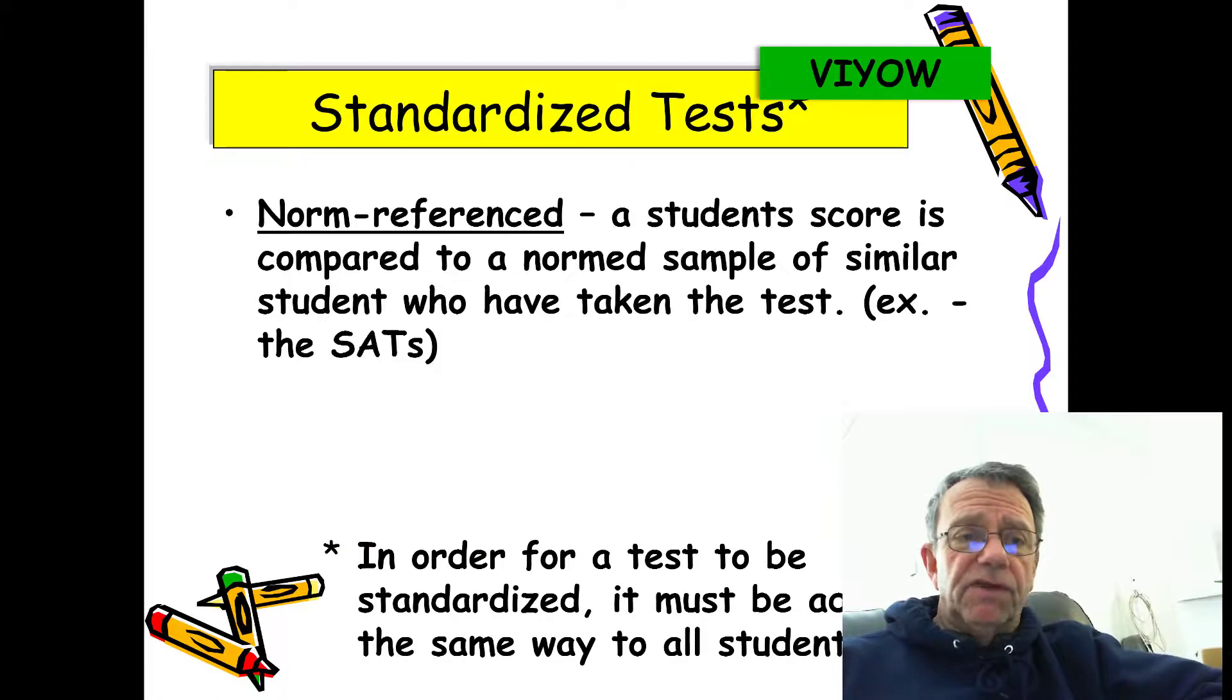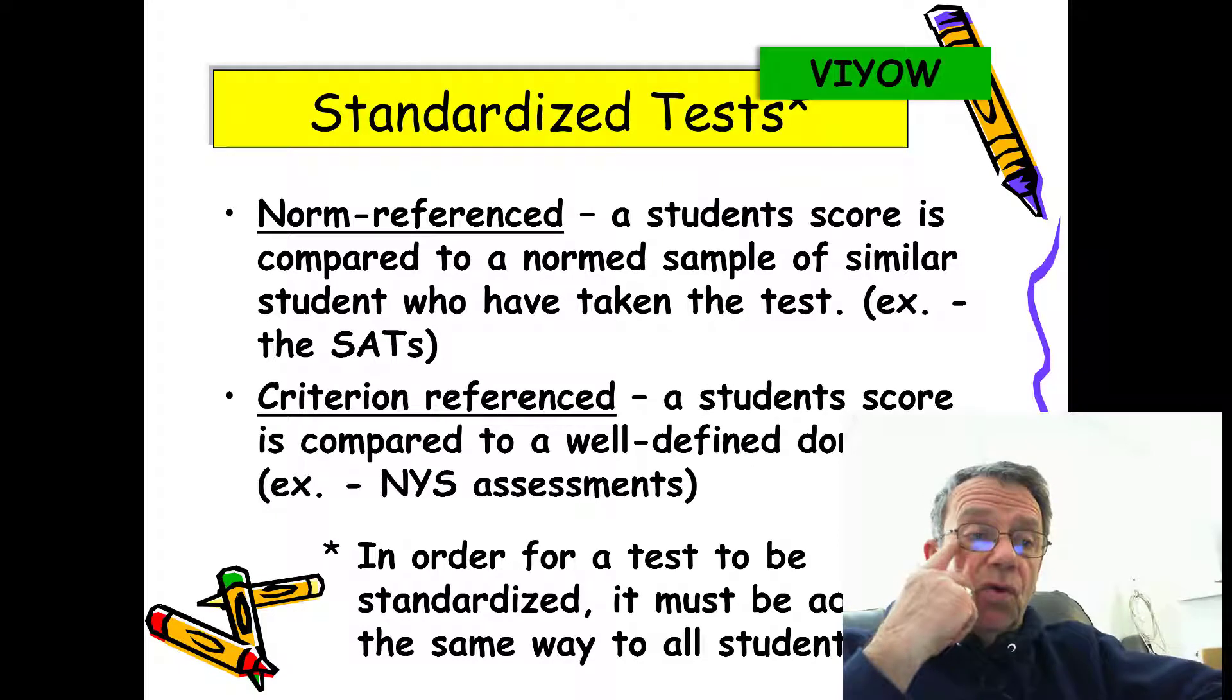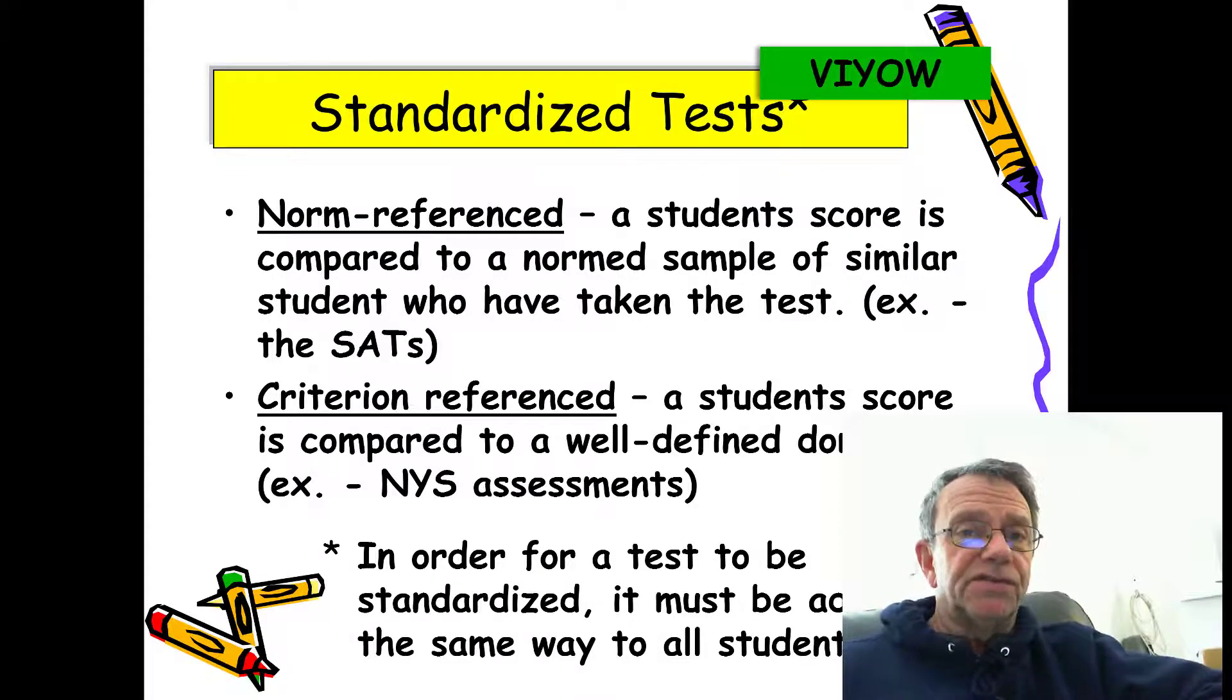On the other hand, a criterion-referenced test compares test results with a standard or domain, like our state assessments. Theoretically, everyone could get a 4. However, after the results are in, the Education Department determines the cut points. In other words, what raw score equals a 4, a 3, 2, etc. So while in theory everyone could get a 4, because the state sets these cut points after the test results are in, it can't happen.